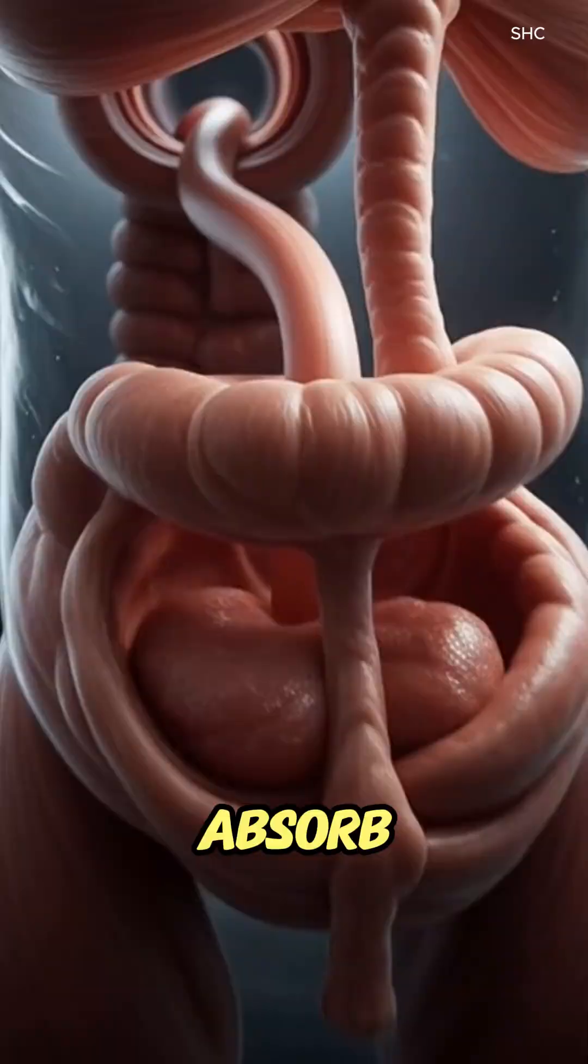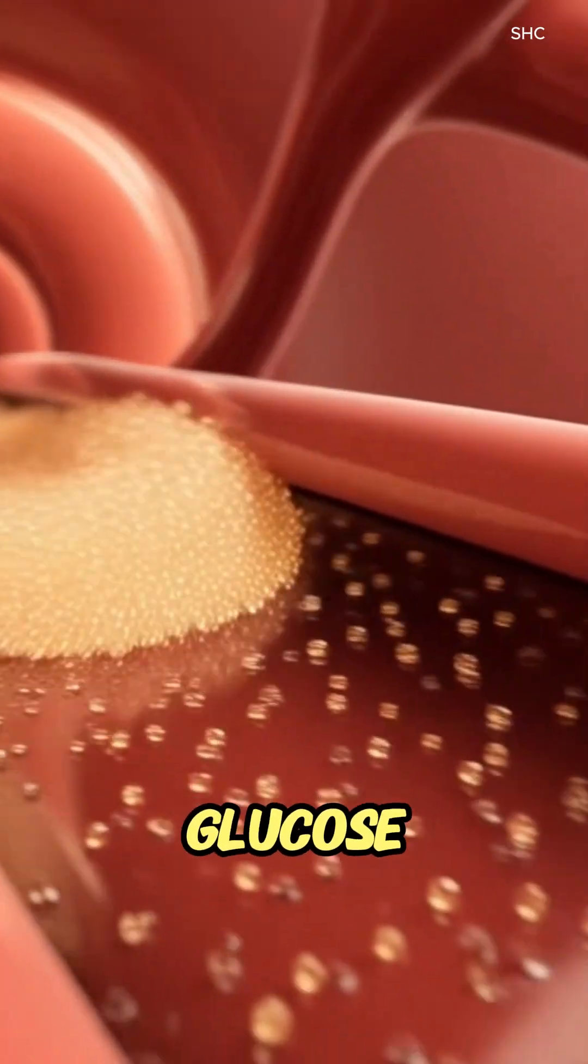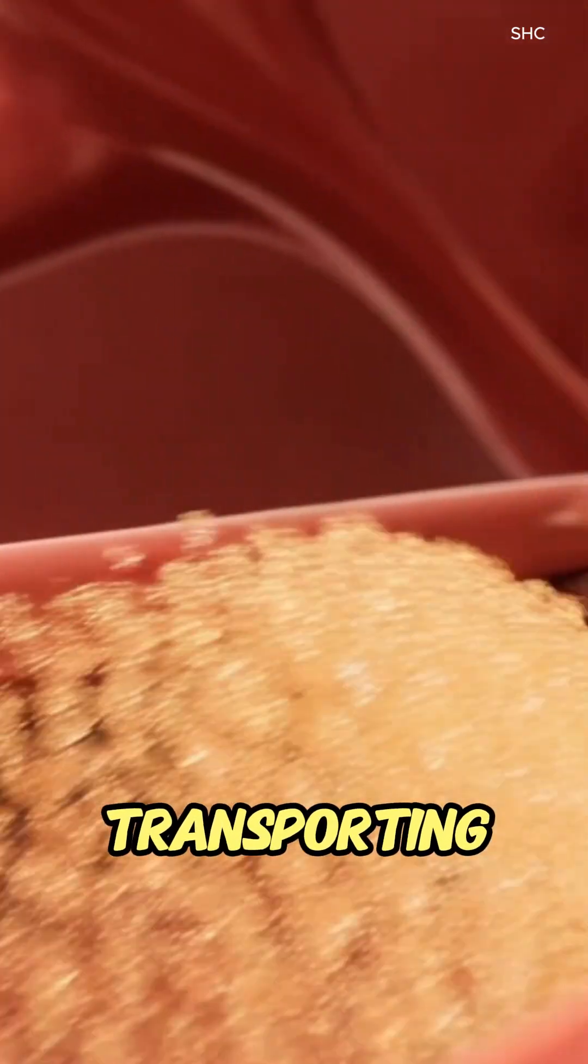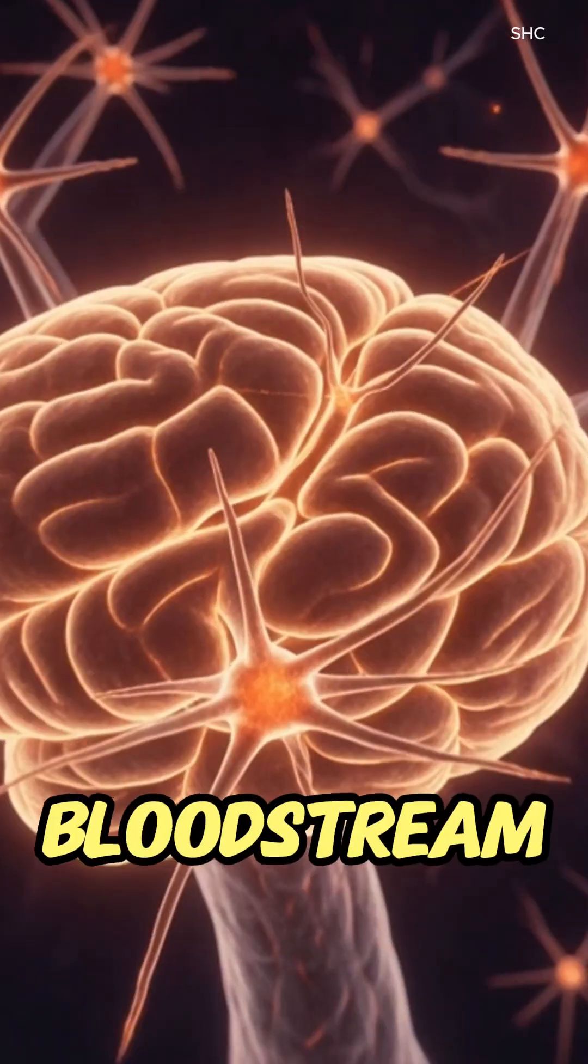Here, villi absorb antioxidants, glucose, and minerals, transporting them via capillaries into the bloodstream.